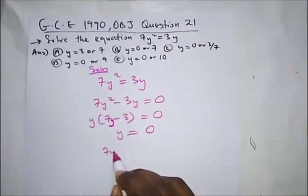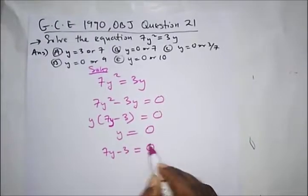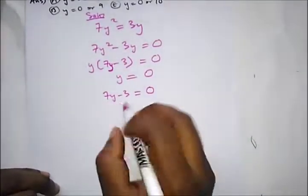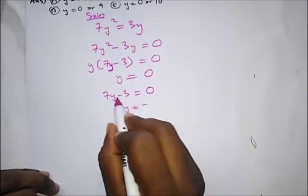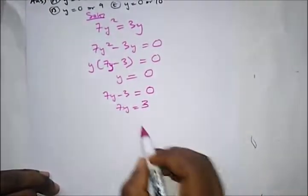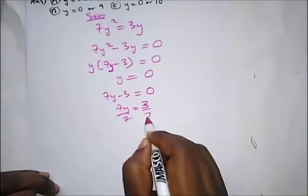So this is y equal to 0, or 7y minus 3 equal to 0. So from here we have 7y equal to minus 3 coming to this side, will be 3.